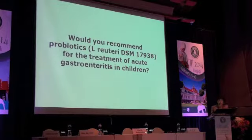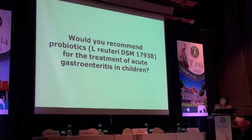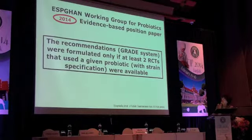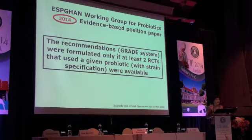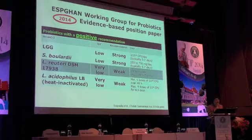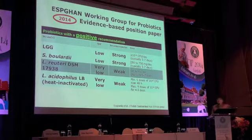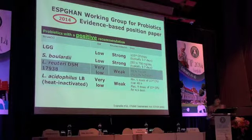Now a question: would you recommend probiotics — and in particular Lactobacillus reuteri DSM 17938 — for the treatment of acute gastroenteritis in children? Let me show you the conclusions from the ESPEGAN working group on probiotics. We only make recommendations using the GRADE system when at least two randomized trials using a given probiotic with strain specification were available — for Lactobacillus reuteri DSM 17938, that criterion was met. We identified four probiotics with positive recommendations: Lactobacillus GG, Saccharomyces boulardii, and new to this paper, Lactobacillus reuteri DSM 17938.